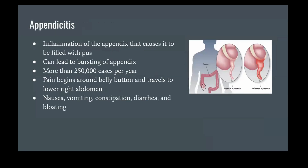The first disease I will be discussing is appendicitis. Appendicitis is the inflammation of the appendix. A blockage of the appendix lumen can cause an infection, resulting in the organ being filled with pus. If the appendicitis worsens, it can cause the bursting of the organ. There are over 250,000 cases per year in the US.